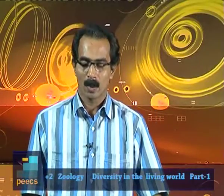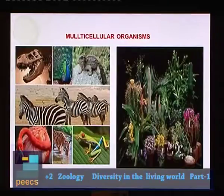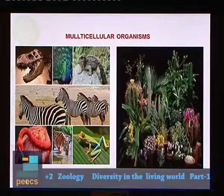There are large numbers of organisms whose body carries many cells. Such organisms are called multicellular organisms. We have birds, zebras, frogs and plants, etcetera. These are all multicellular organisms.